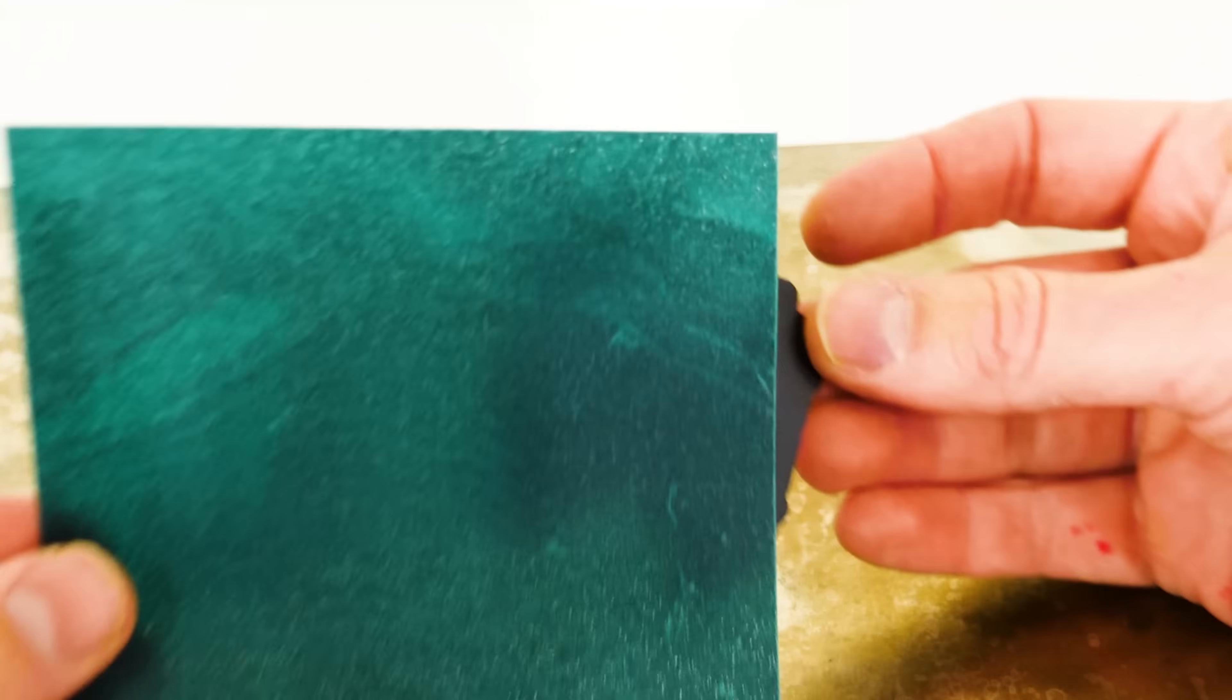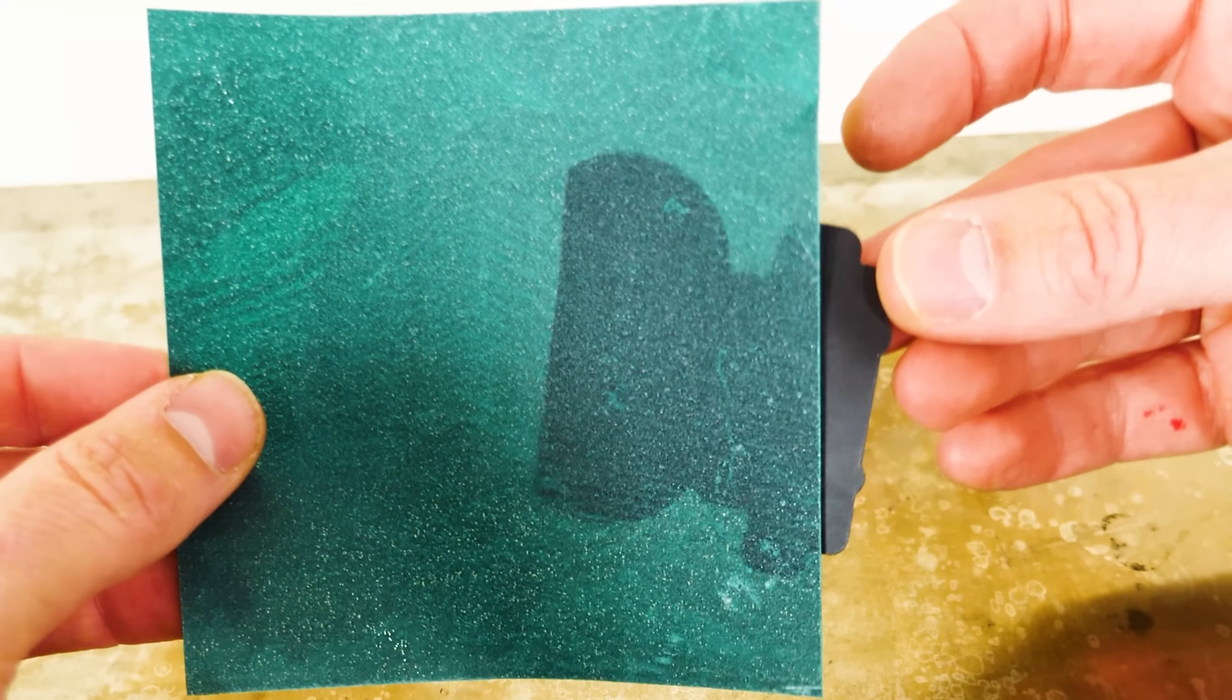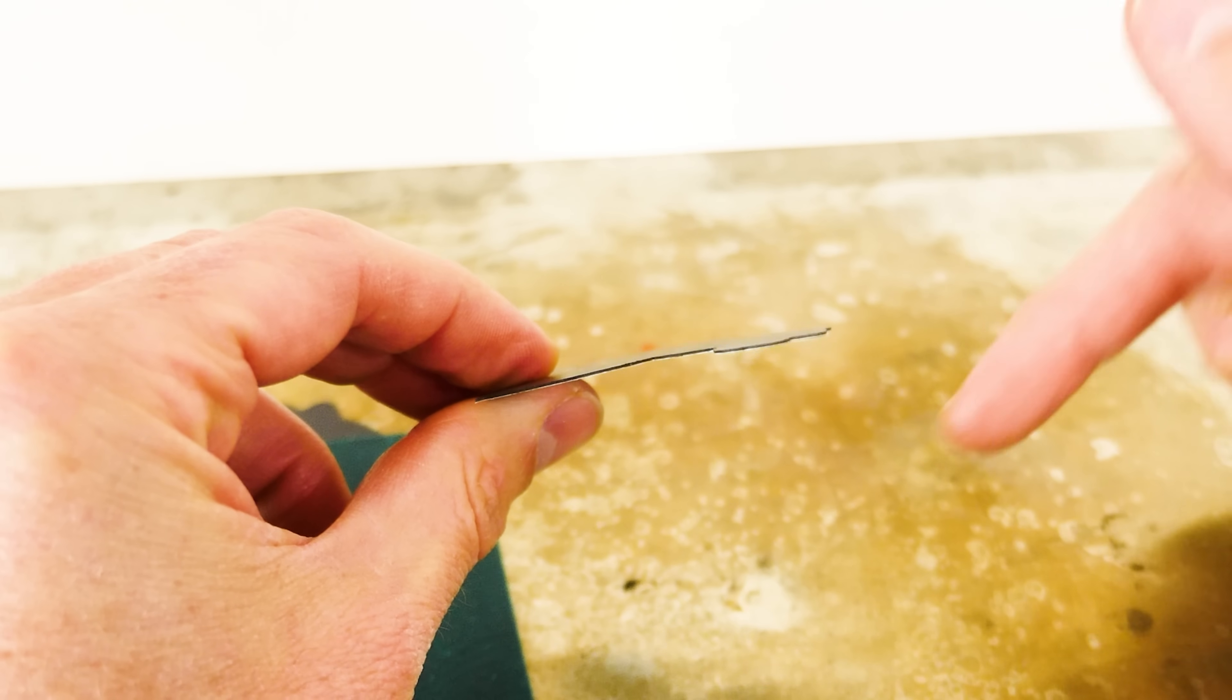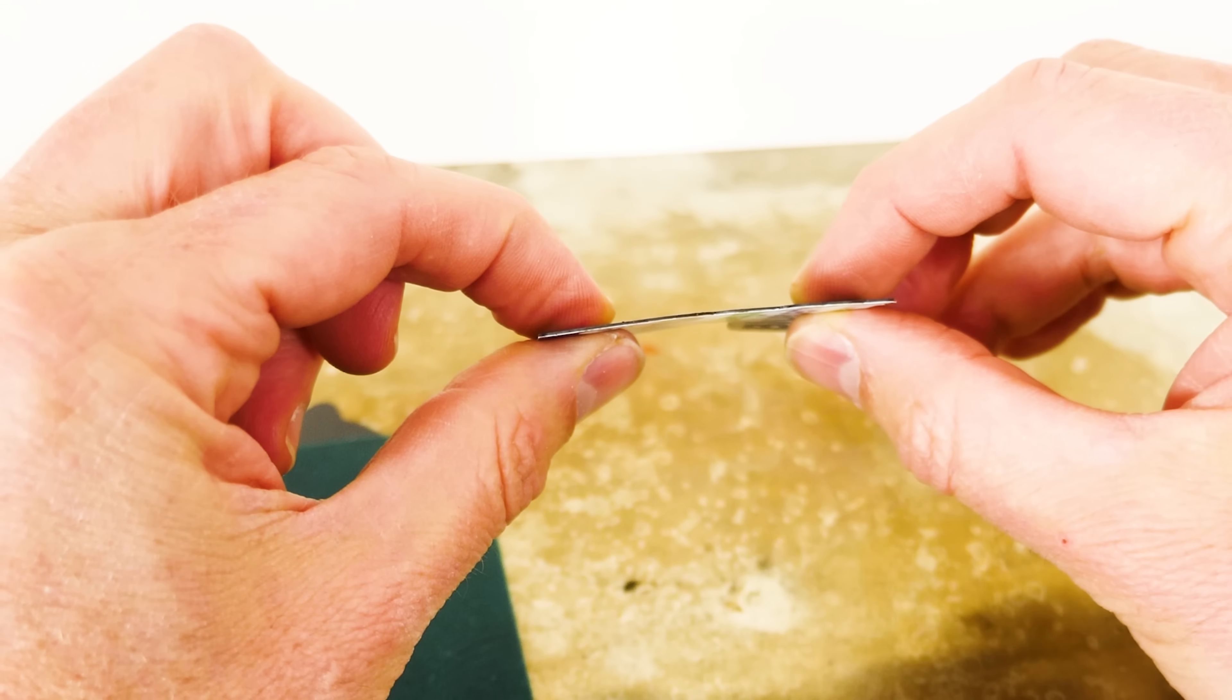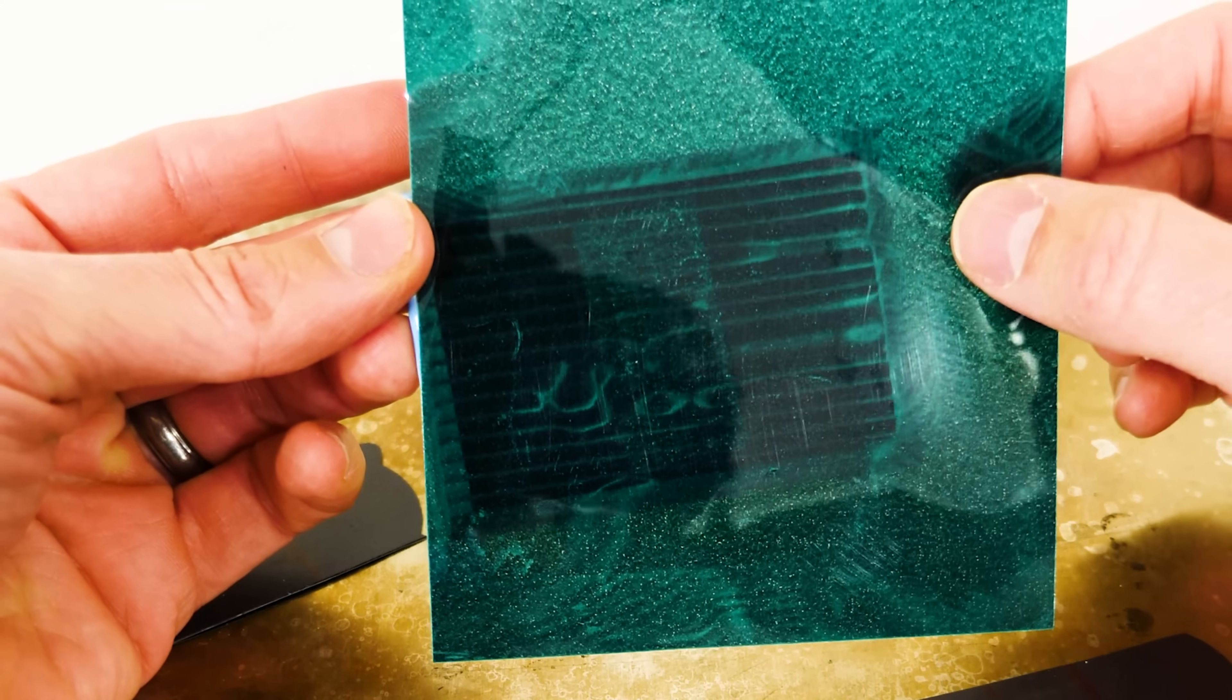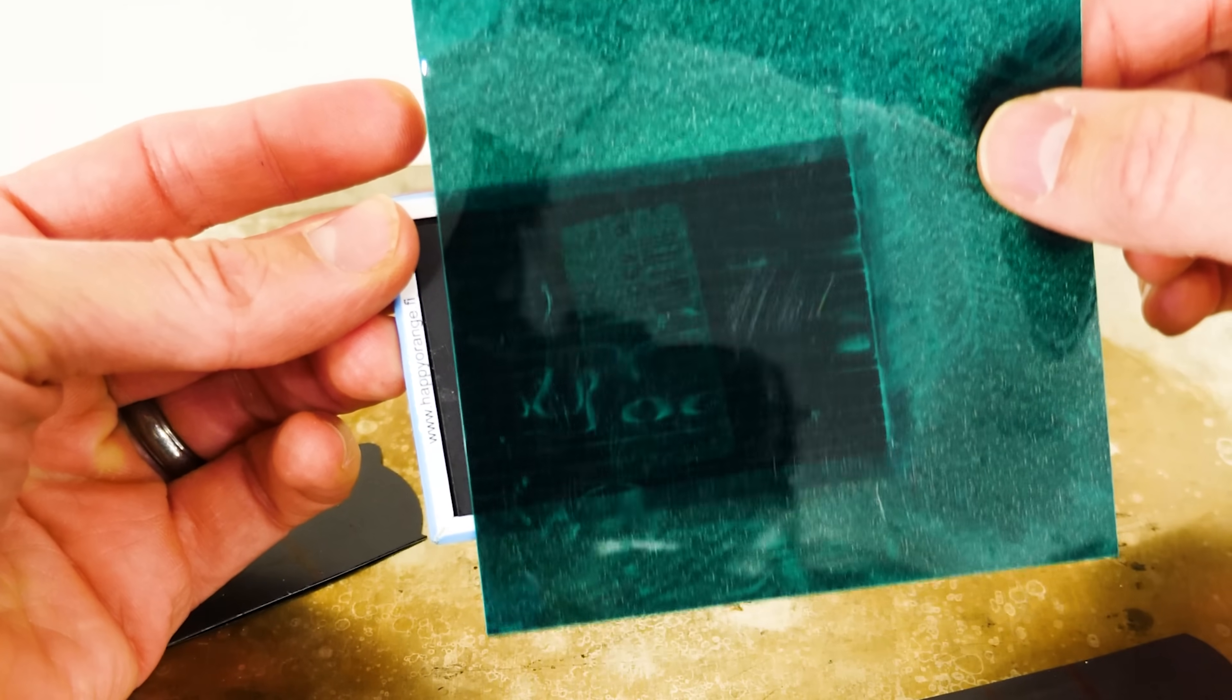Look at those lines. So refrigerator magnets actually have these alternating north and south poles as well. So you don't get long range of these magnets, but you do get strong force right close up to it. Here's another one. Depending on the magnet, you'll get different spacing of the magnetic fields on the back.